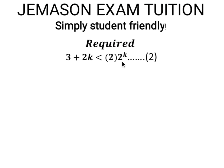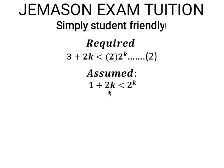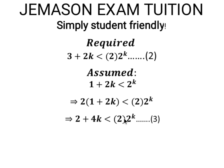The strategy is to make the right-hand sides of the required statement and the assumed statement identical. We multiply both sides of the assumed statement (1 + 2k < 2^k) by 2. Since 2 is positive, the inequality sign is unaffected, giving us 2 + 4k < 2 × 2^k. This is the modified form of the assumed statement from the inductive hypothesis step.